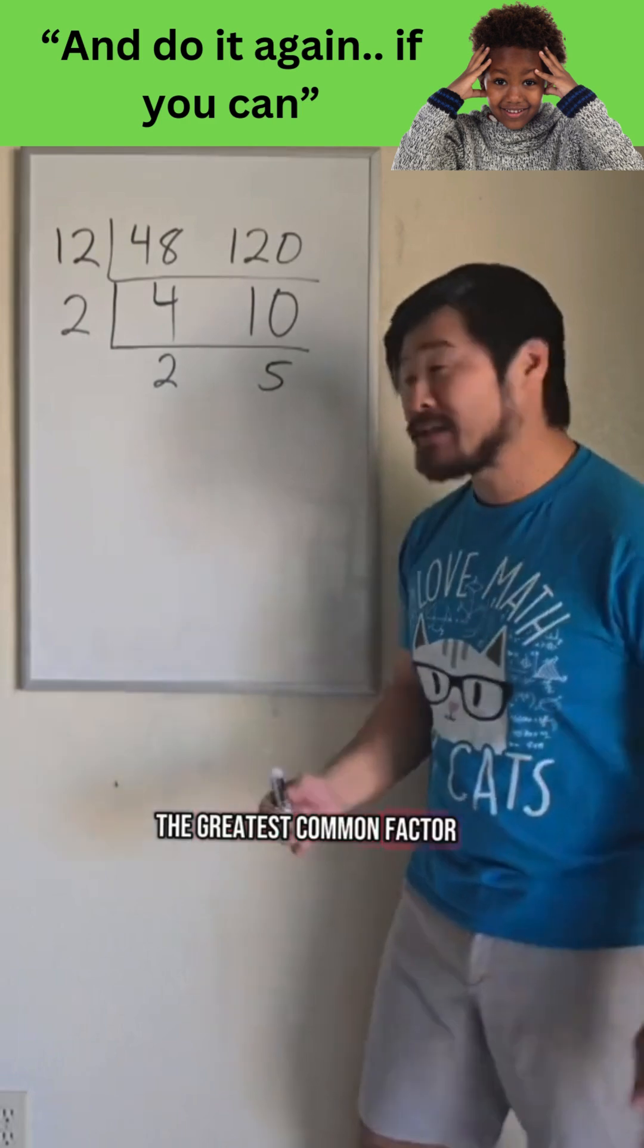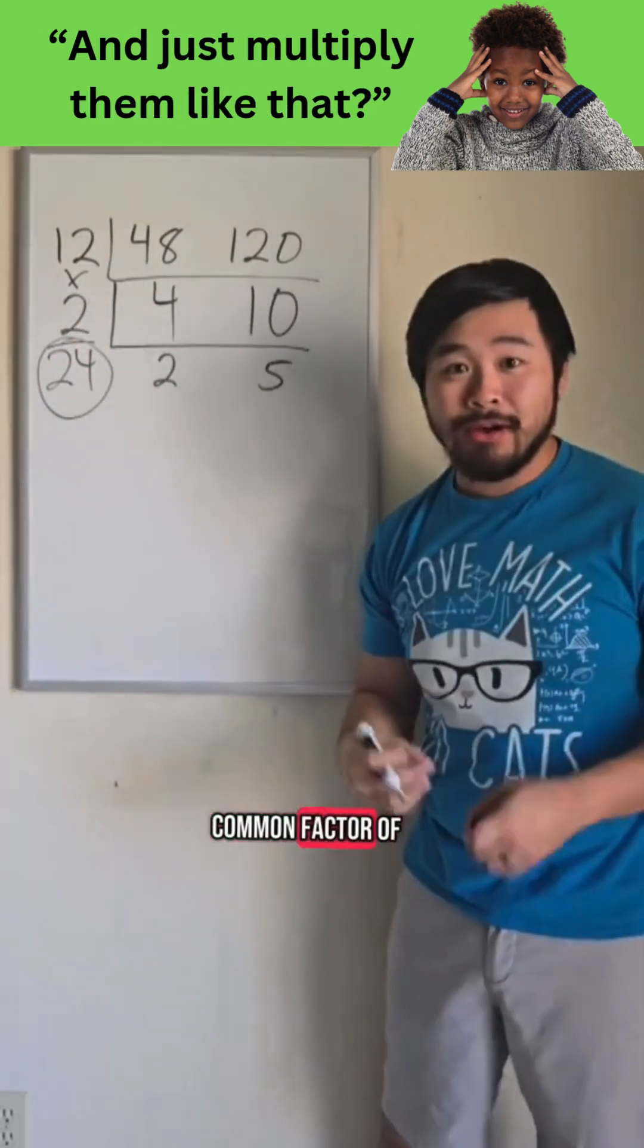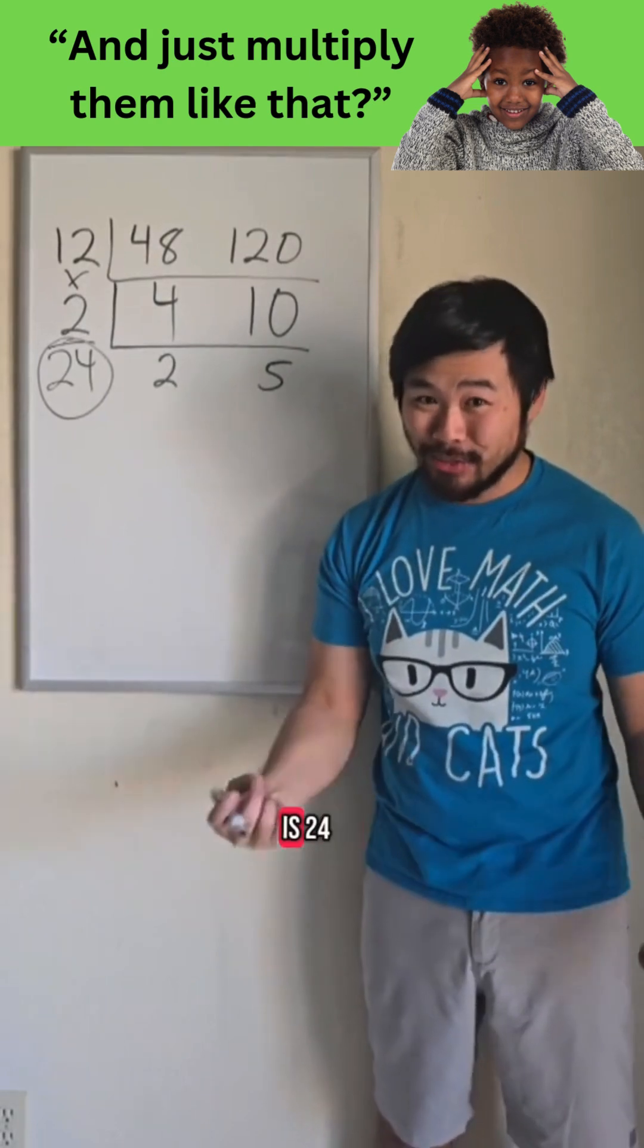So to find the greatest common factor, all we do is multiply the factors that we factored out. So the greatest common factor of 48 and 120 is 24.